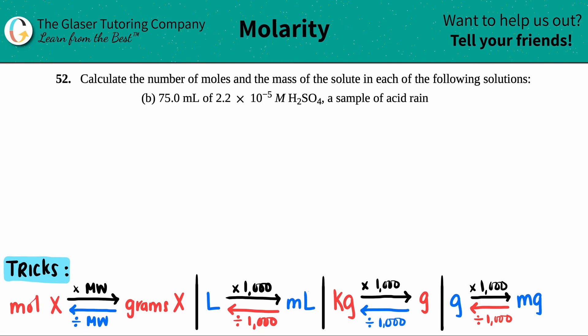Number 52. Calculate the number of moles and the mass of the solute in each of the following solutions. Letter B: 75.0 mL of 2.2 times 10 to the negative 5th molarity solution of sulfuric acid H2SO4, a sample of acid rain.